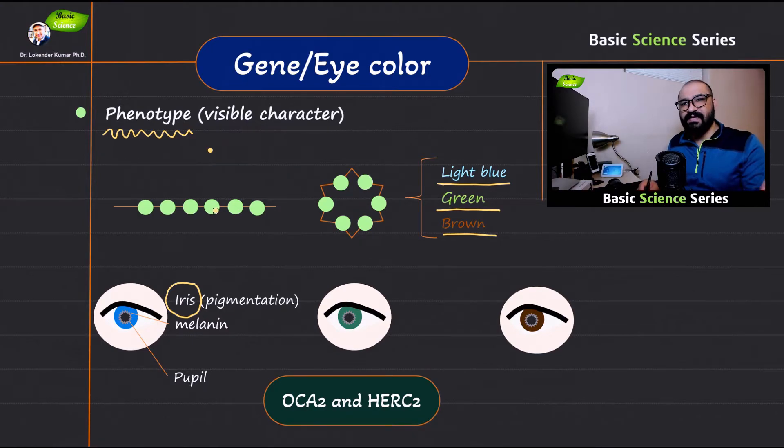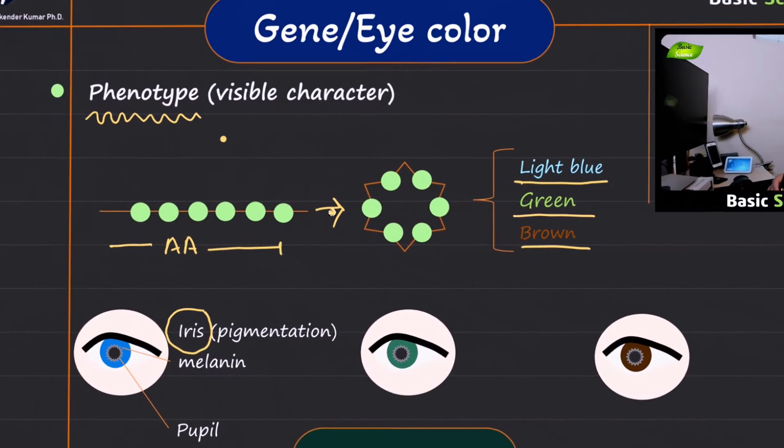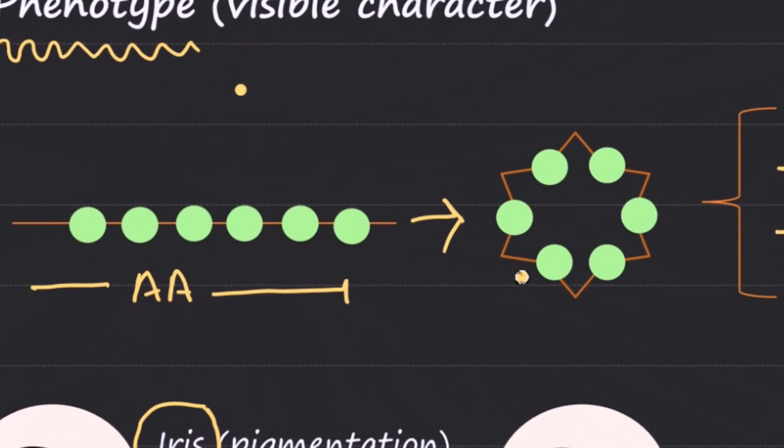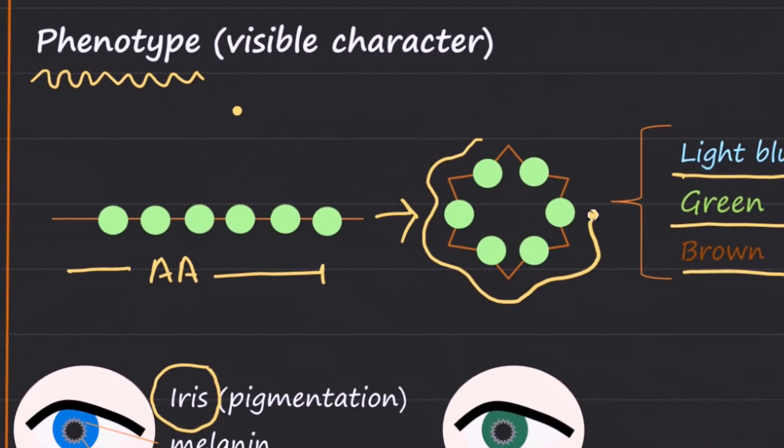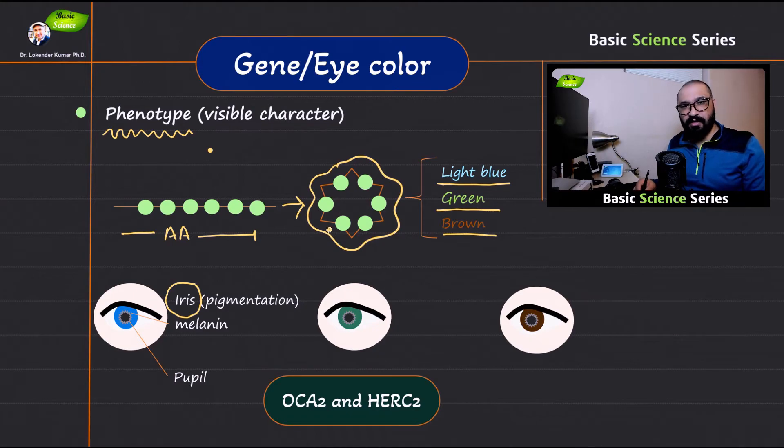So in the previous slide we discussed that we have this amino acid, a chain of amino acid that is generated from the messenger RNA molecule. Further it's going to fold in a proper manner to form a functional protein. So it's going to fold in a unique manner to form a functional final product and this product is going to perform certain function and is going to be responsible for different eye colors. As you can see here light blue and then you have green and brown.